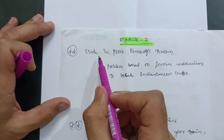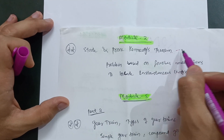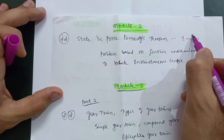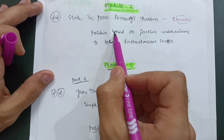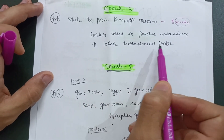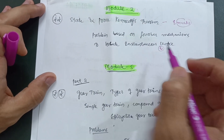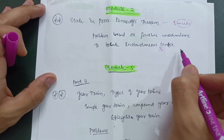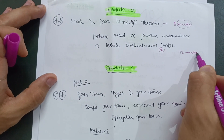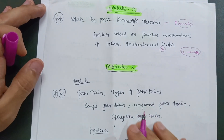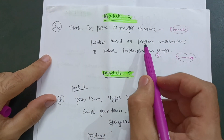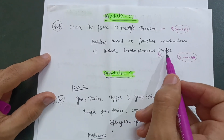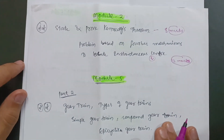In module 2, state and prove Kennedy's theorem - this is an important question carrying 8 marks, sometimes 6 marks, sometimes 10 marks. Also, problems based on the 4-bar mechanism to locate the instantaneous center are very simple problems in this module, carrying 12 or 14 marks sometimes. Go through your textbook and read once - you will automatically get the concepts on these instantaneous center problems.